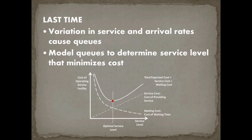The cost of operating a service facility was composed of two components: service cost, which was driven by the number of servers we hired and was linear, and the waiting cost of our customers, which was non-linear. The summation of these two provided our total expected cost for a firm, and we wanted to find that point that minimized it — the optimal service level.